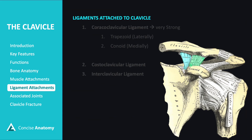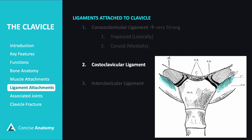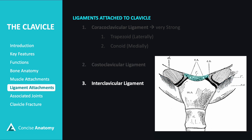Let's look at the major ligaments attached to the clavicle. The coracoclavicular ligament is extremely strong and connects the clavicle to the coracoid process. It has two parts: the trapezoid ligament laterally and the conoid ligament medially. This ligament stabilizes the acromioclavicular joint. The costoclavicular ligament is short, flat, and rhomboid shaped — it's the main stabilizer of the sternoclavicular joint and serves as the axis of movement during clavicle elevation. Finally, the interclavicular ligament connects the clavicles across the top of the sternum.